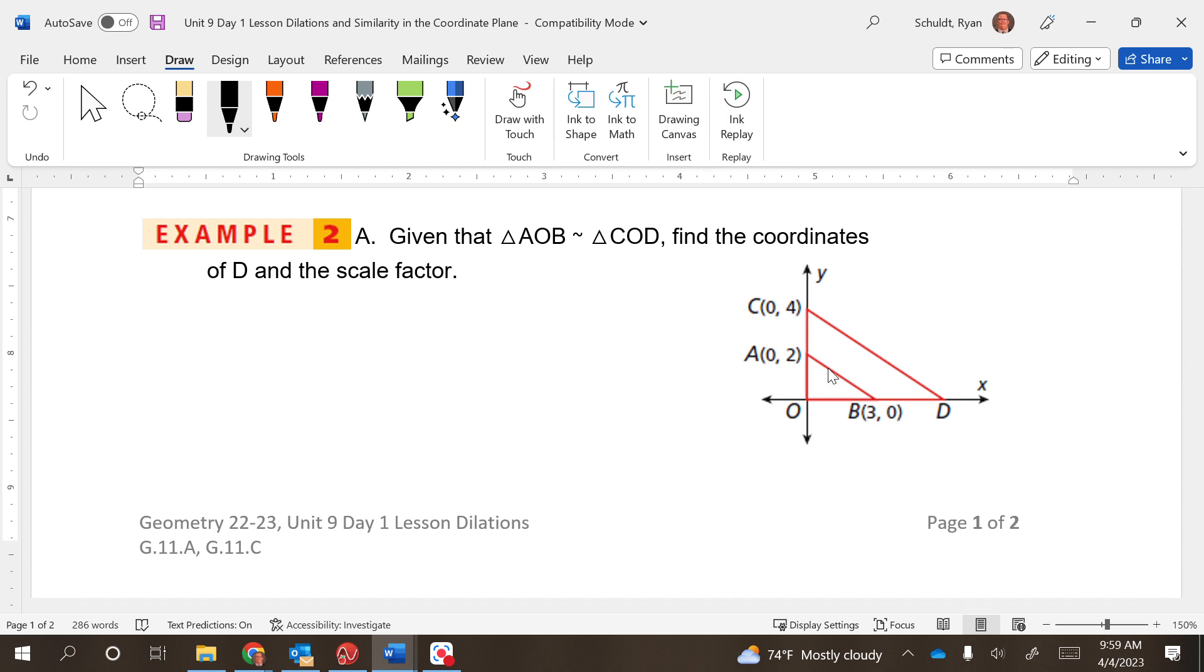Let's keep it moving. Given that triangle AOB is similar to triangle COD, find the coordinates of D and the scale factor. Remember, scale factor is new divided by old. What are we finding? We're finding D—D is our new, that's our old. Now the y is zero, so that's not going to do us any good. But if we look over here at C and A, this is going to be our new because that's the line connected to D. This is going to be our old.